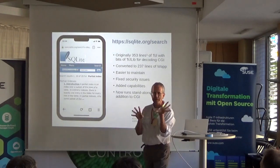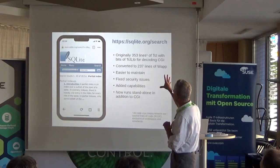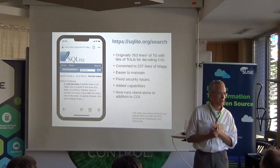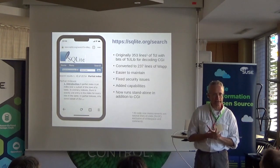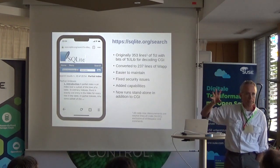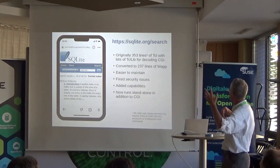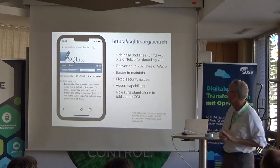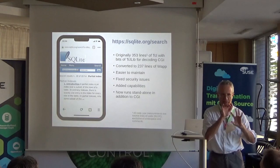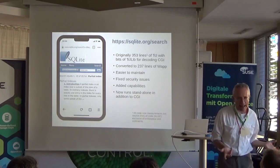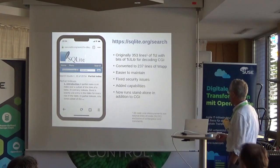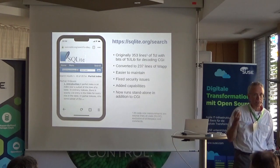One example: if you go to the SQLite website and click the search button, you get a search dialog. The search is driven by the full text search engine in SQLite, but we needed some glue logic, all done in TCL. It was originally 353 lines of TCL code, and we had to pull in bits of the TCL lib stuff to decode the CGI parameters. There were bugs and vulnerabilities — people sent us private emails pointing out a cross-site scripting vulnerability in our search engine. So I recoded it in WAP: it's much shorter, easier to maintain, secure, and I can test it on my desktop rather than on the live website.